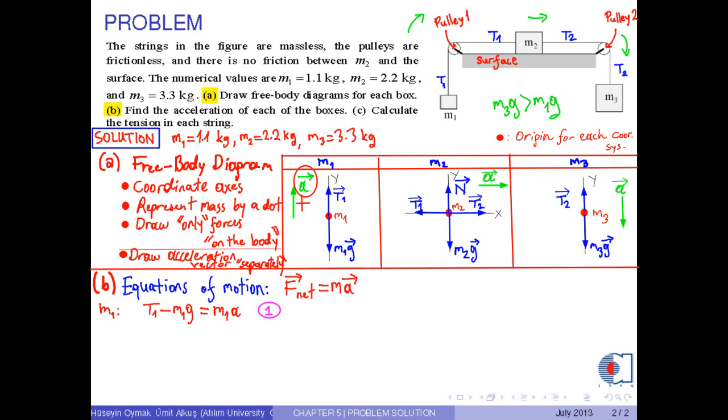Next, for mass M2, to write the equation of motion along the x-axis, we take the direction of the acceleration vector as positive. Therefore, the net force along the x-axis becomes T2 minus T1, and it is equal to M2 times A by the Newton's second law.